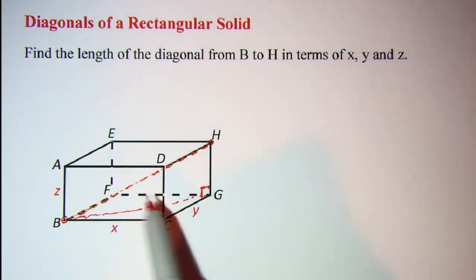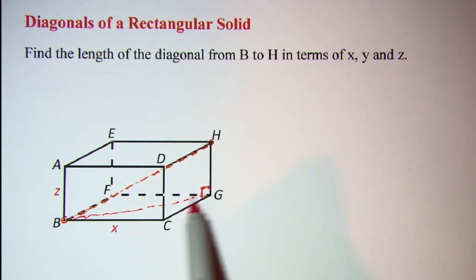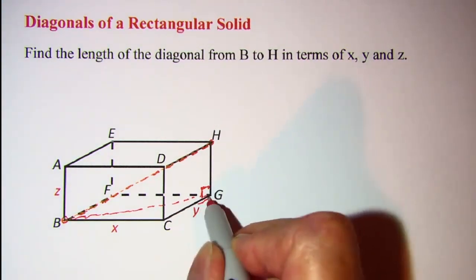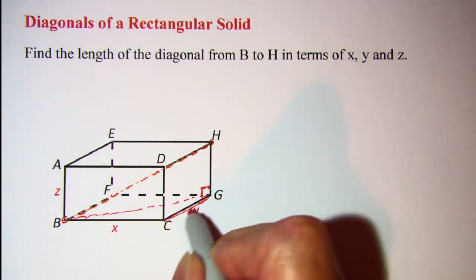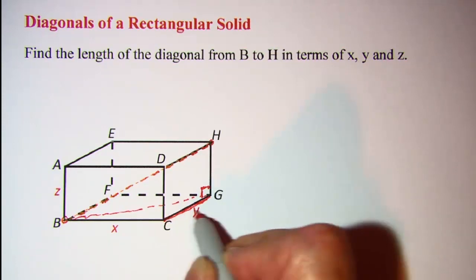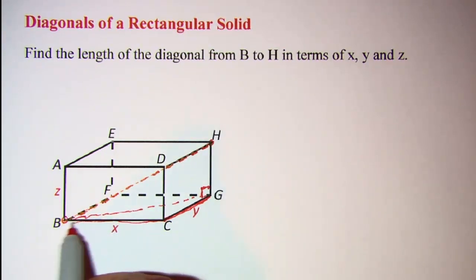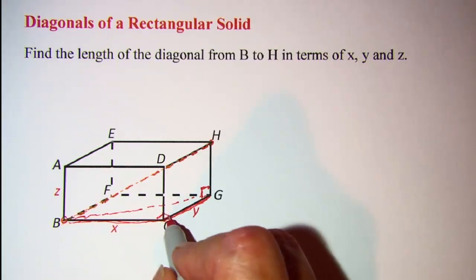So in order to find the length of BG we're going to need to use the base right triangle, which has this as a leg, the one labeled y, and then this one as a leg, the one labeled x, and that also is a right angle.